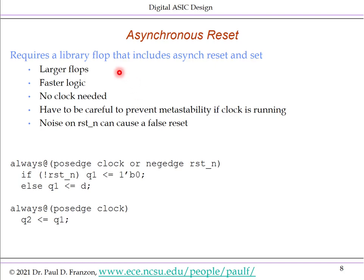Asynchronous reset requires additional gates inside the flop, so it is larger, but it's faster because those gates are not in the critical path. No clock is needed, so if clock gating is off when reset is asserted there's no problem. However, since it's asynchronous, any glitches on reset can cause a false reset, so some additional care may be needed to prevent noise on the reset tree.